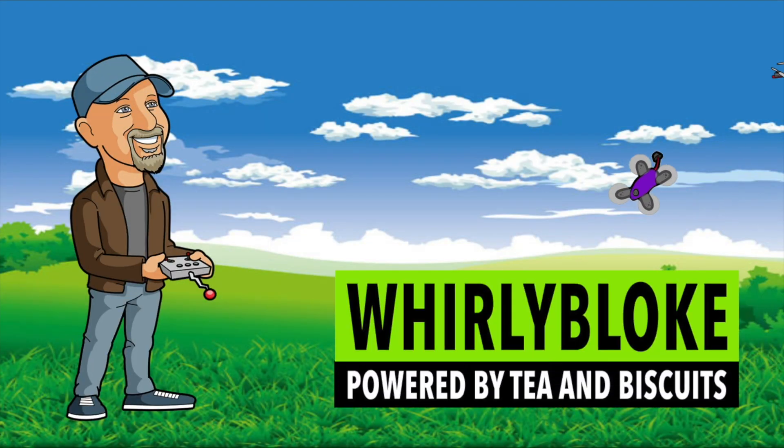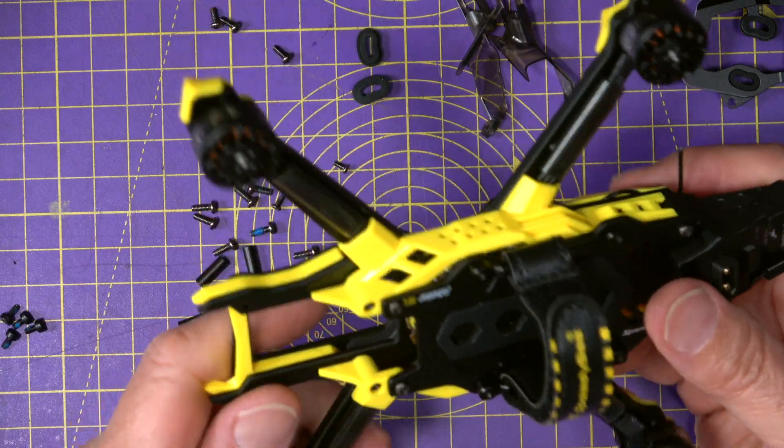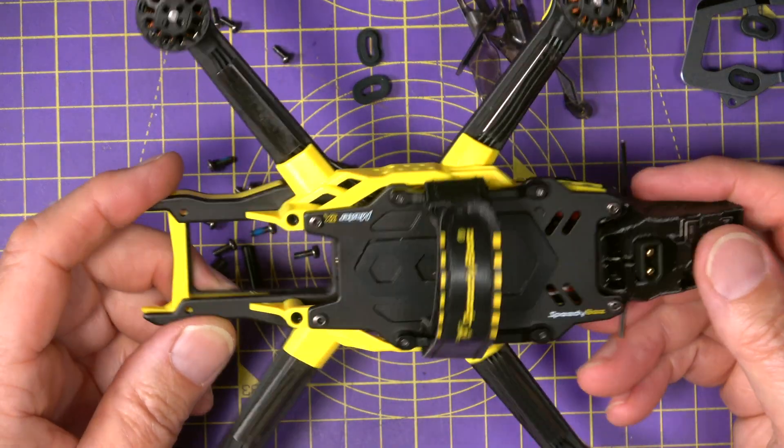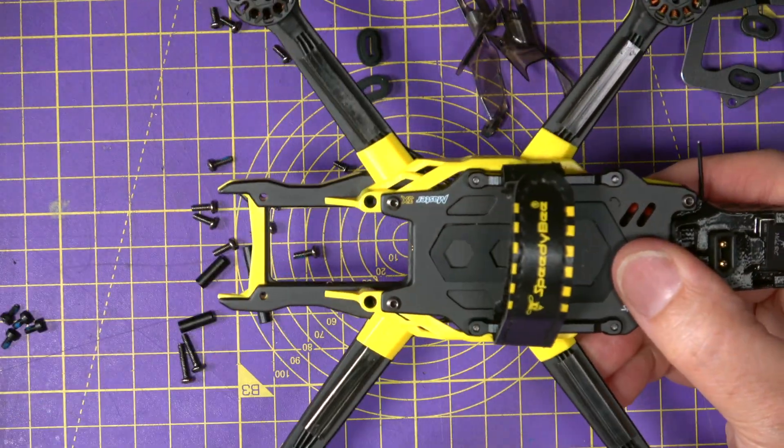Hello and welcome to the Whirly Bloke channel. This is all finished now. Everything's wired up, checked it out in Betaflight and everything is as it should be. Anything missing is the camera of course.